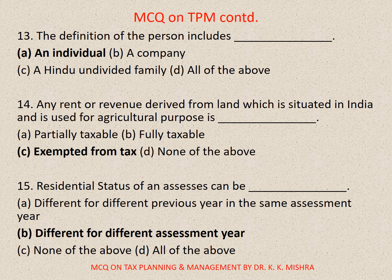Question 13: The definition of the person includes — A. An individual, B. A company, C. A Hindu undivided family, D. All of the above. The correct option is A. An individual. Question 14: Any rent or revenue derived from land which is situated in India and is used for agriculture purpose — the correct option is C. Exempted from tax.